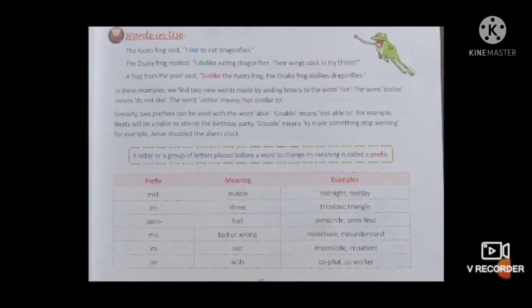Like means 'pasand hai' (you like something). And dislike means 'nahin pasand hai' (you don't like it). So Osaka frog is saying that he doesn't like dragonflies at all, because their wings get stuck in his throat. The frog from the pool said 'unlike' the Kyoto frog, the Osaka frog dislikes dragonflies.